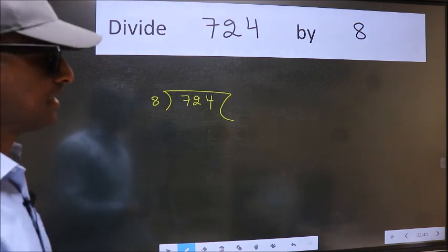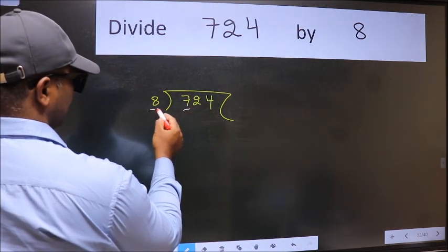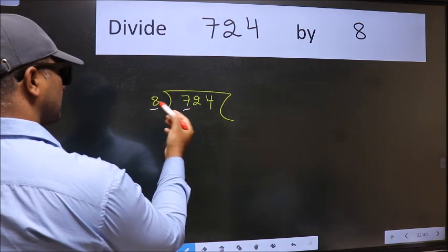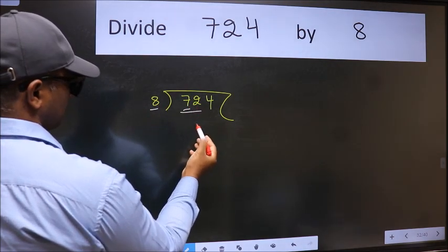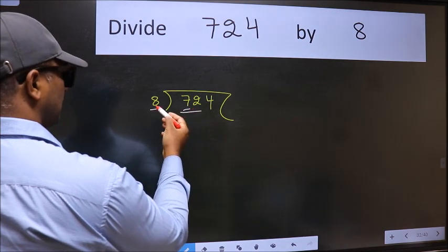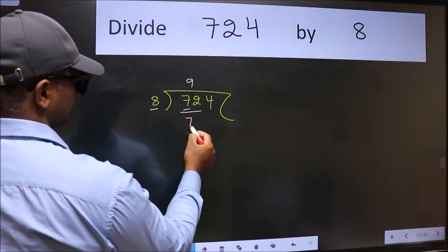Next, here we have 7 and here 8. 7 is smaller than 8, so take two numbers: 72. When do we get 72 in 8 table? 8 nines 72.